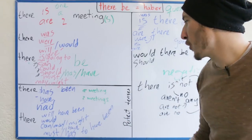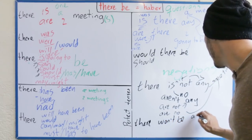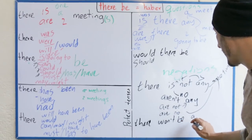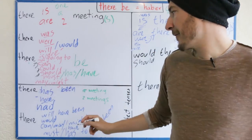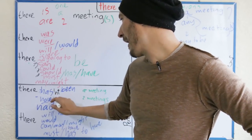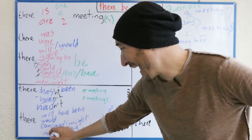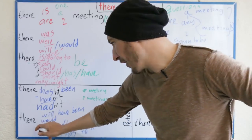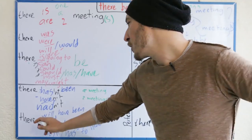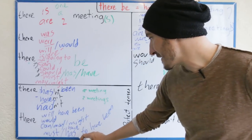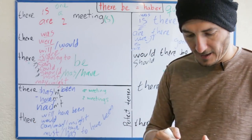En el futuro, no habrá reunión: there won't be a meeting. O: there won't be any meetings. En los perfectos: there hasn't been, there haven't been. There wouldn't have been. There can't have been — no puede haber habido una reunión: there can't have been a meeting. No puede haber habido reuniones: there can't have been any meetings. No tiene que haber habido una reunión: there hasn't to have been any meeting, or there haven't to have been any meetings.